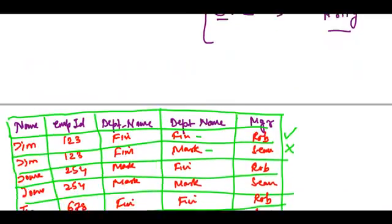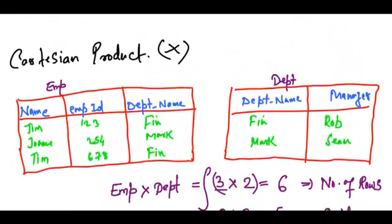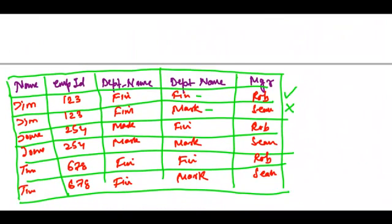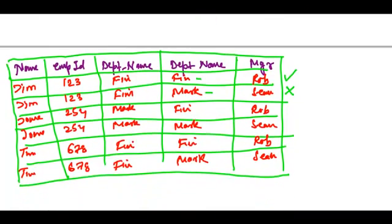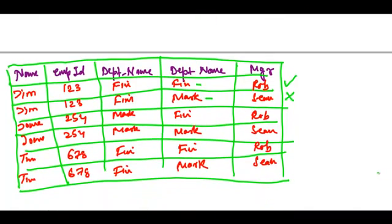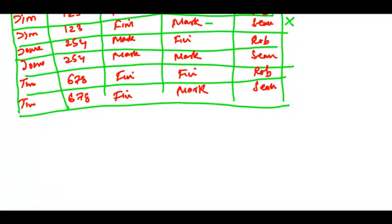That's basically a drawback of the Cartesian product or cross product — it relates every tuple to every other tuple in the other table. We are done with Cartesian product.